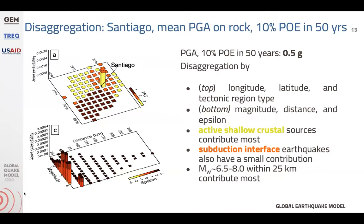We also computed disaggregation to understand which rupture parameters — including position, magnitude, and tectonic region type — are having the most impact on the hazard. For Santiago, the ruptures contributing most are those in the active shallow crust with magnitudes larger than 6.5, and in particular those that are very close to the site. This is consistent with the Septentrional Fault.